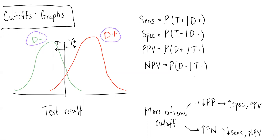And then the line in the middle represents the cutoff that's selected, with results to the right of that cutoff being a positive test result, and results to the left of that cutoff being a negative test result.